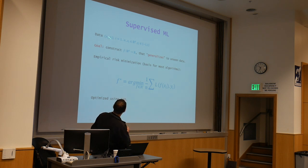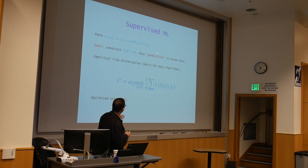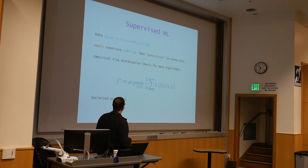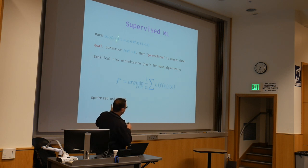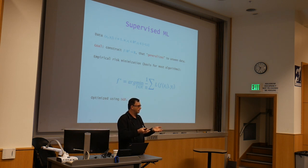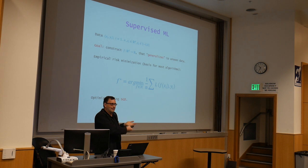What do we have? We have data: XI are features in some D-dimensional space, and YI are labels — for simplicity, binary labels, minus one and one. You can think of image classification tasks like cat or dog. The goal is to construct a function from R^d to R, given this input, that generalizes to unseen data. You give a bunch of examples of cats or dogs, and you want to construct a function on images that, given a new image, decides whether it's a cat or dog. You have to make some assumptions if you want to analyze it.